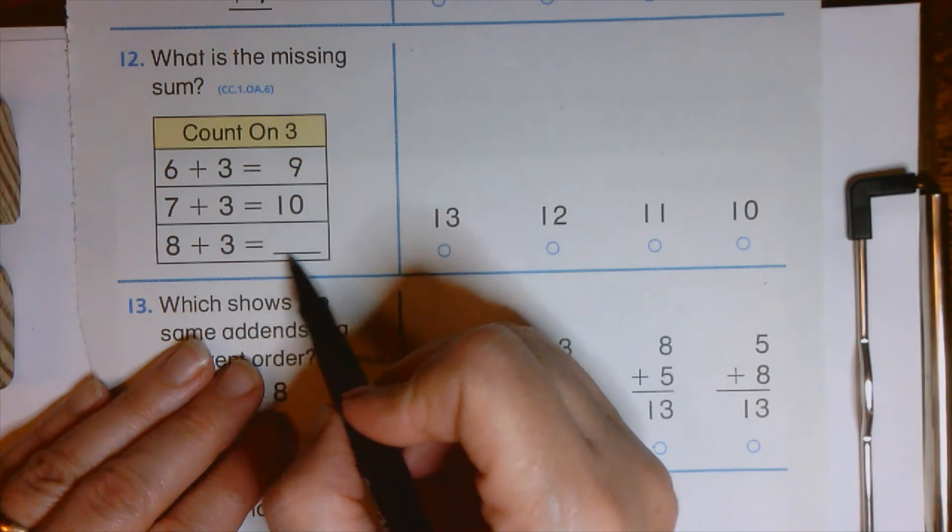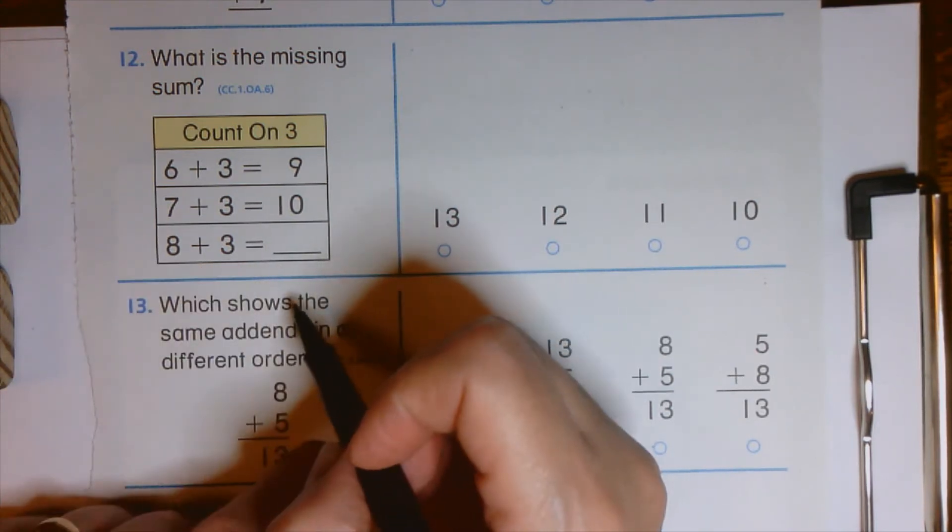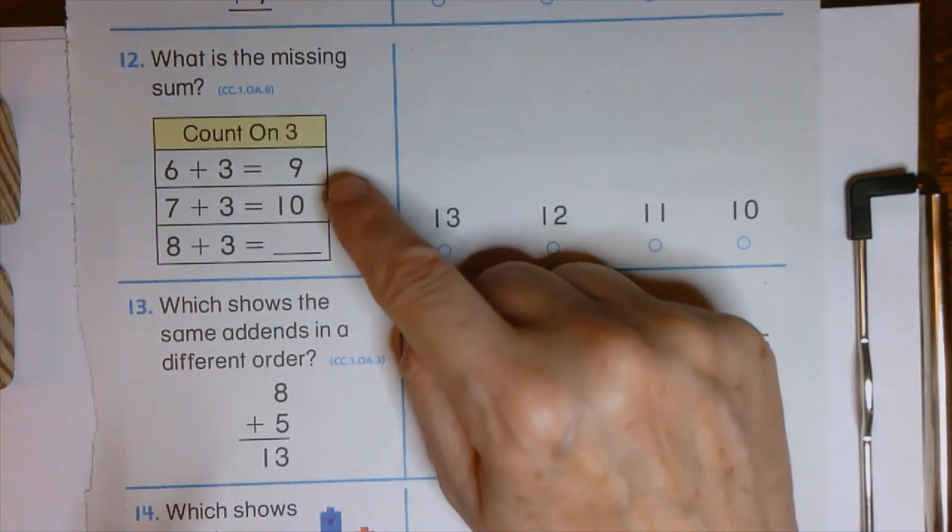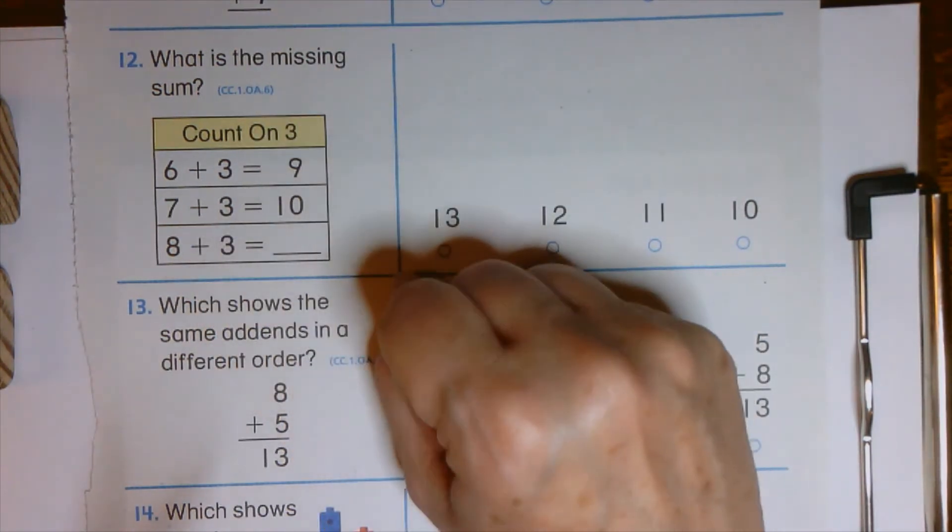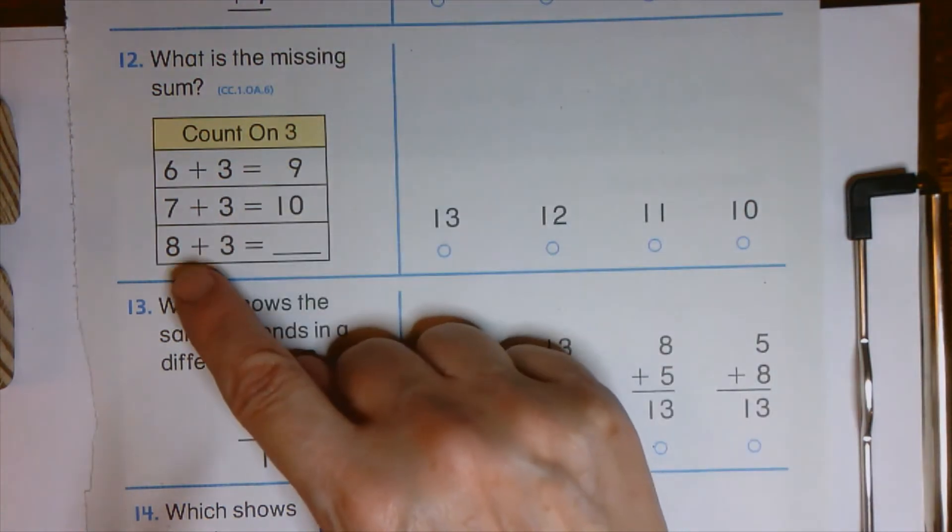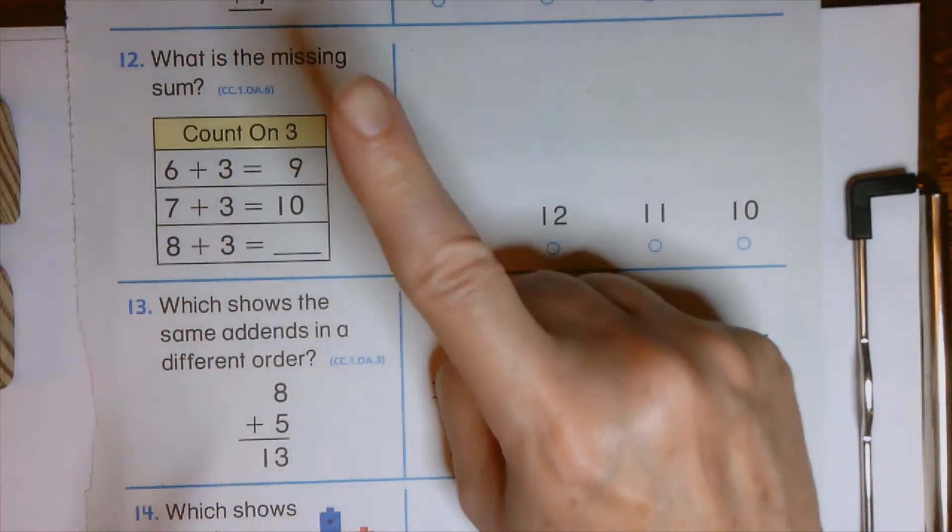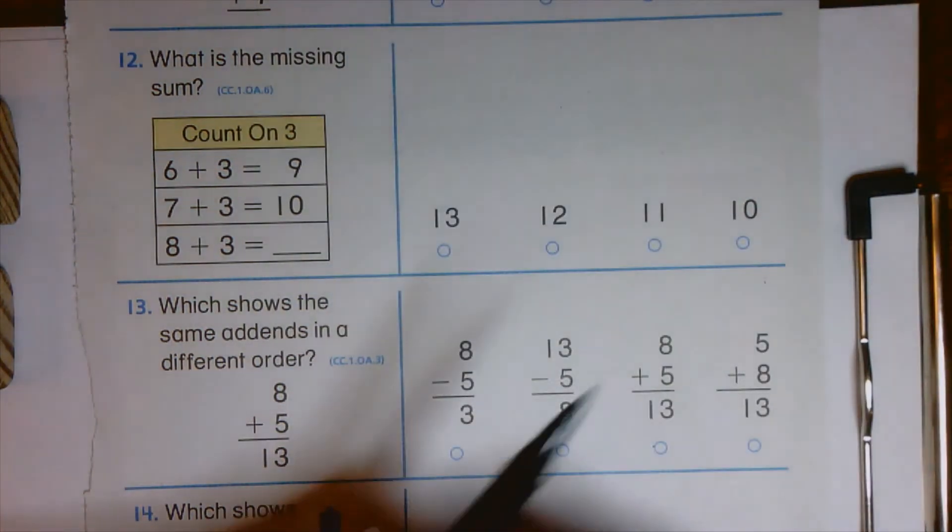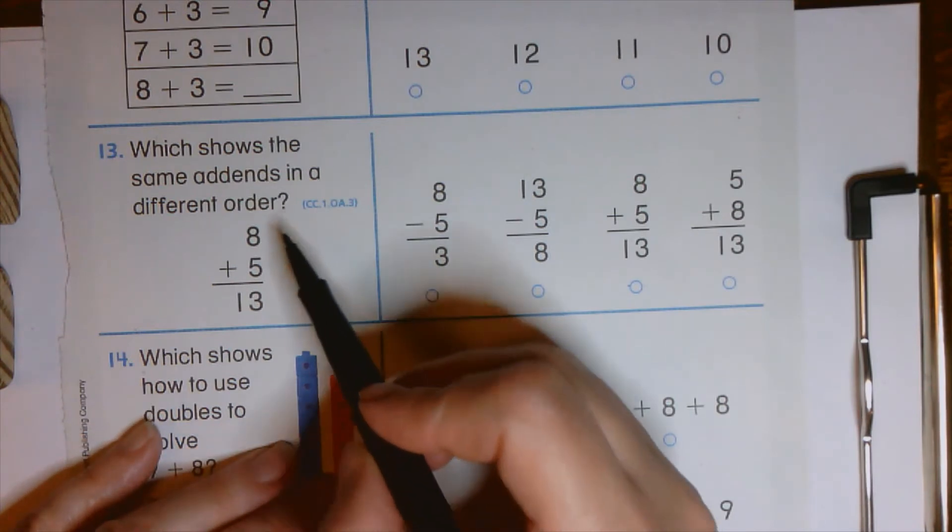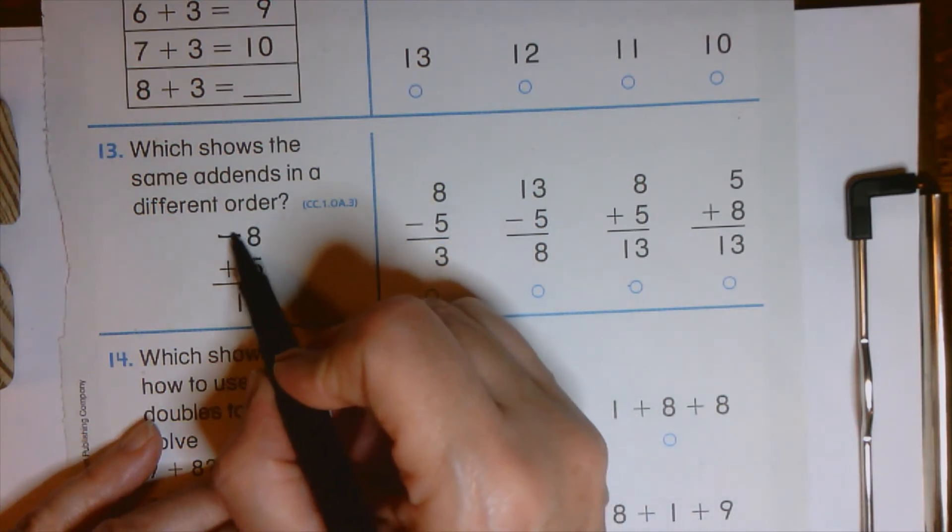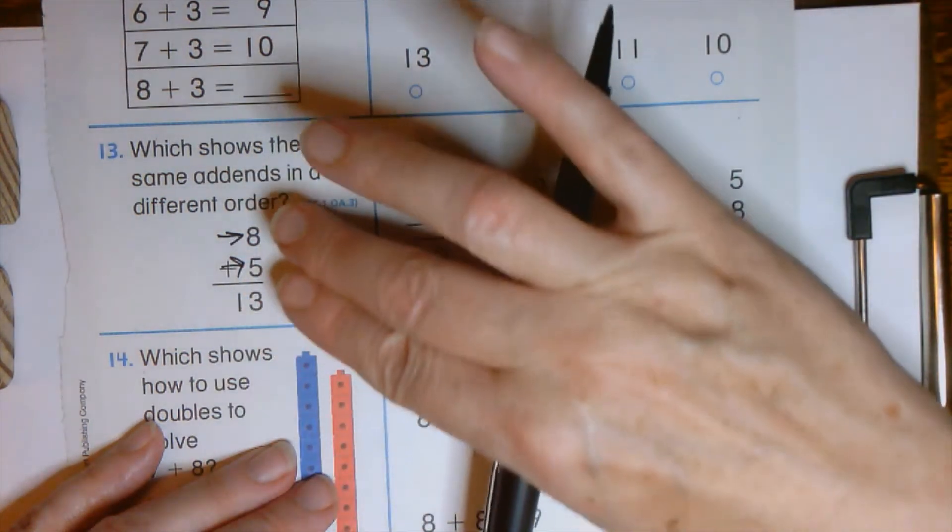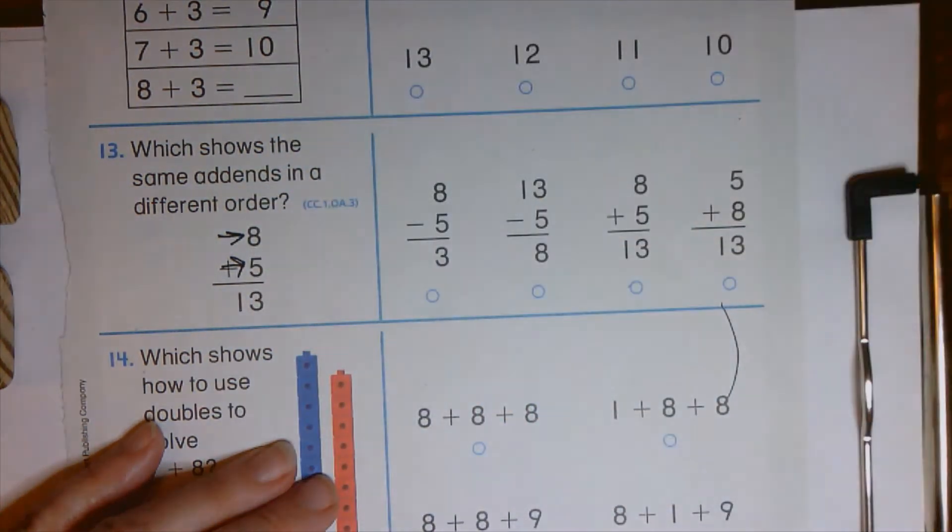The missing sum. Remember sum is what we have here when we put the two amounts together. So counting on three, six, seven, eight, nine, seven plus three, seven, eight, nine, ten. Here's eight plus three, eight. What is it? Color in the circle. Which shows the same addends? Remember here's an addend. Here's an addend. Which one shows these same addends in a different order?